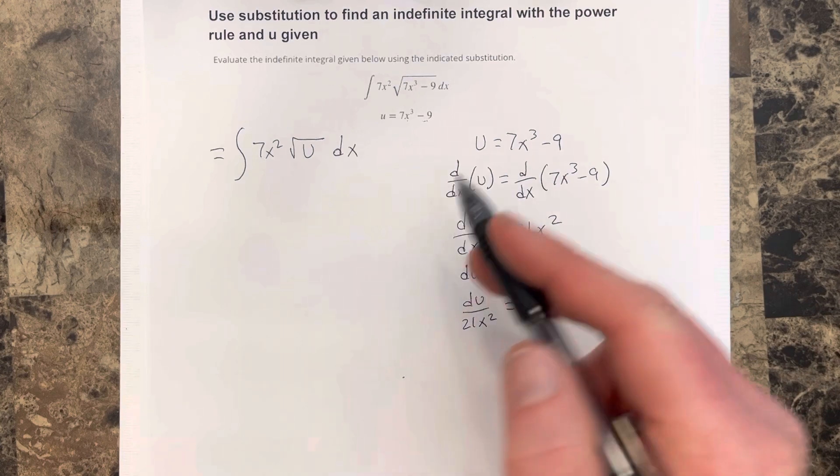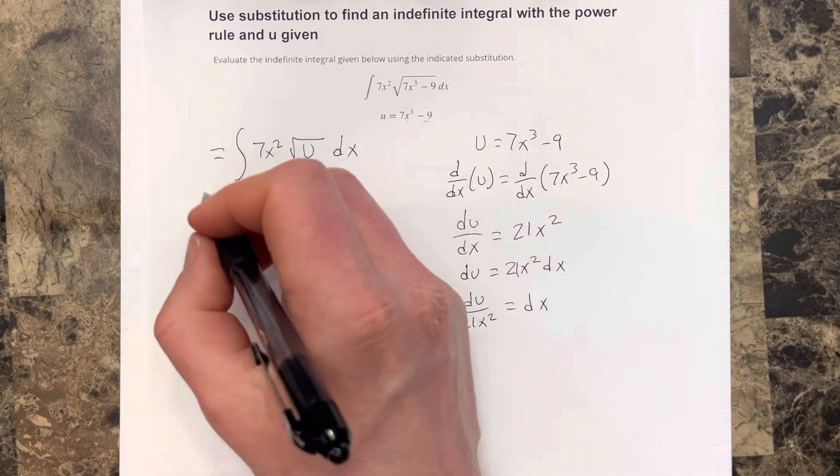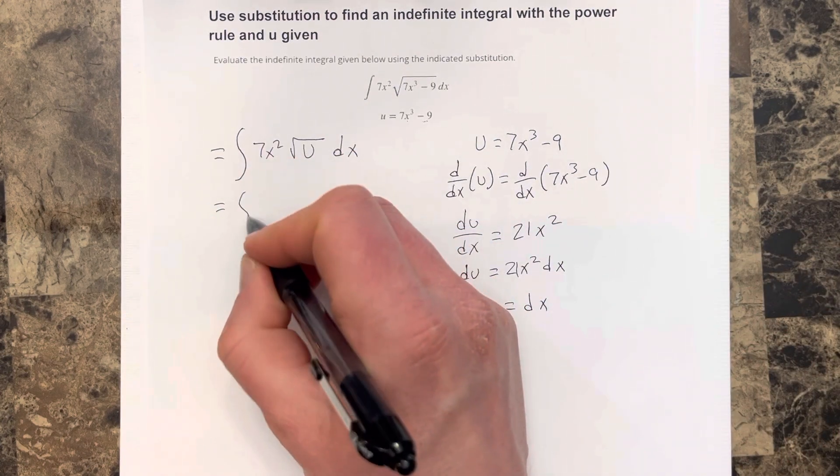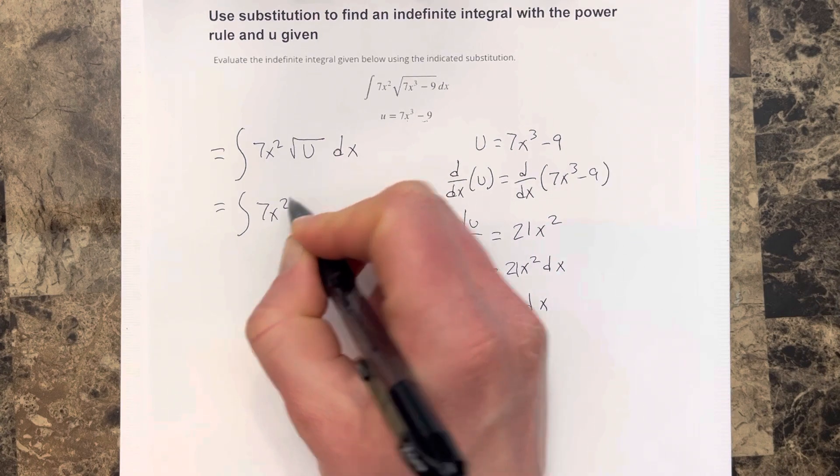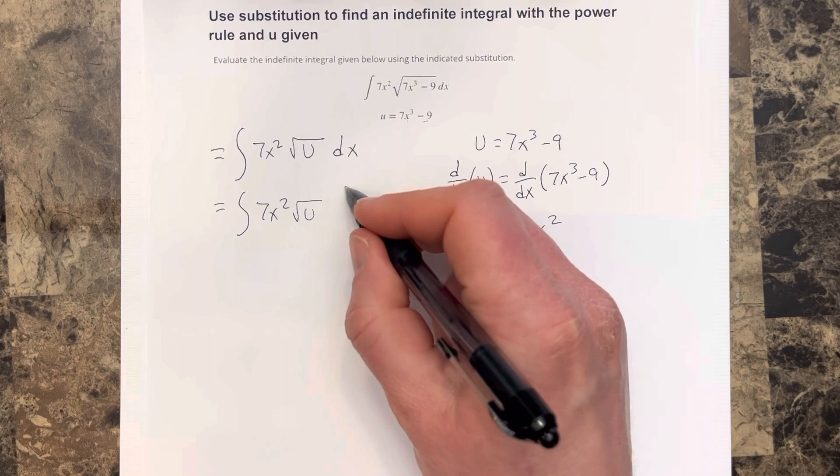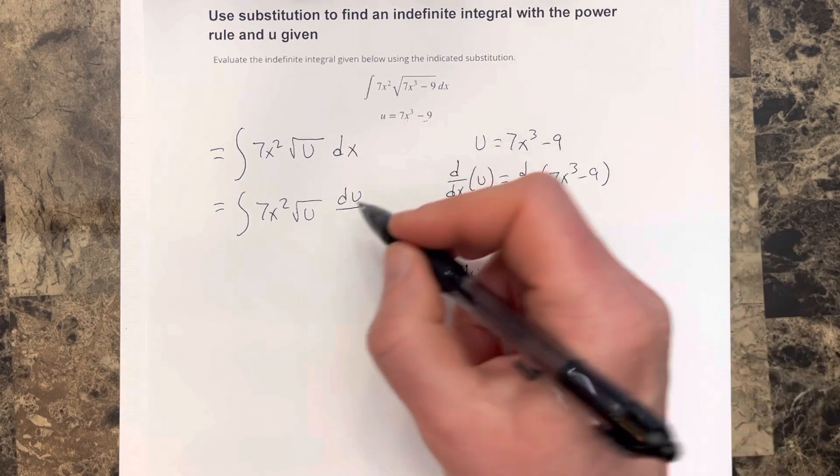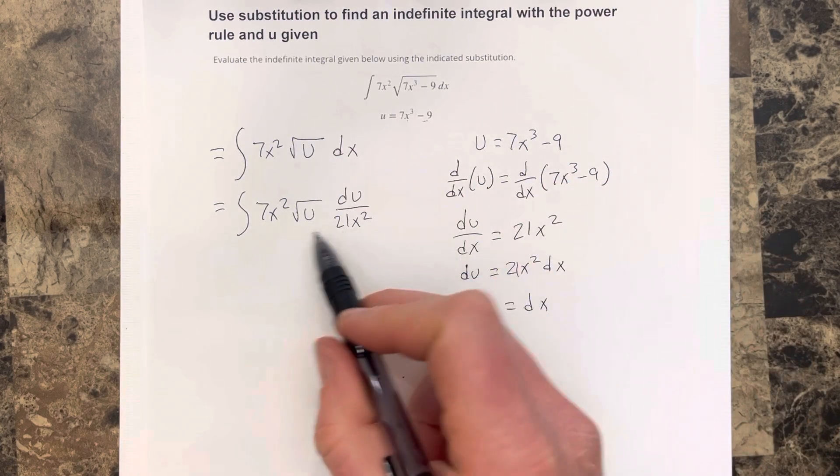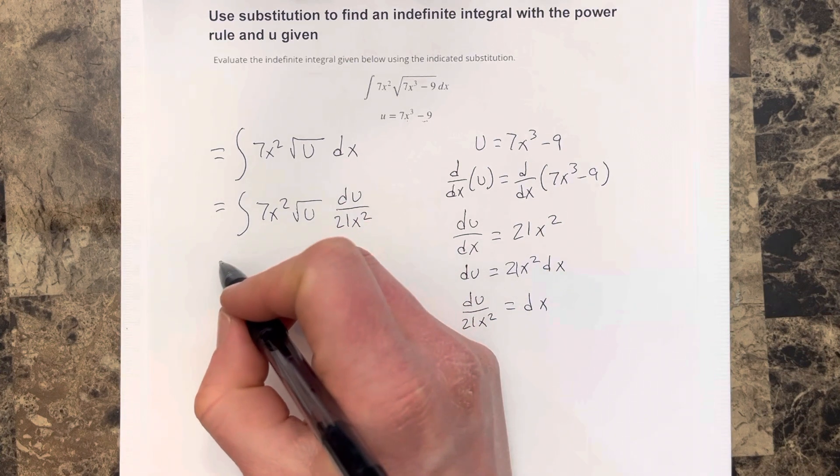Then we're going to resubstitute this for dx here. So we get equals integral 7x squared root u times du over 21x squared. Let's go ahead and multiply this together a little bit.